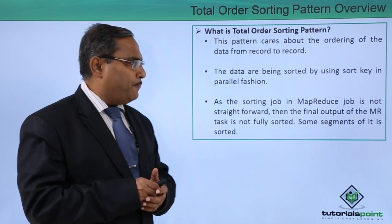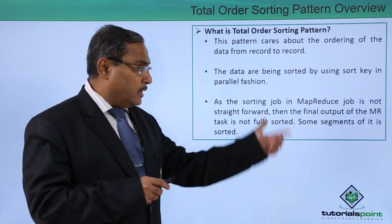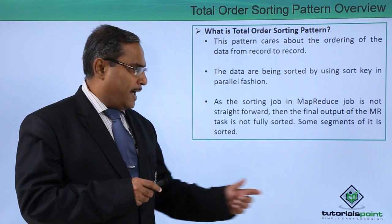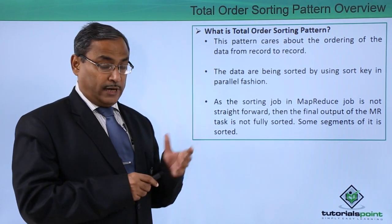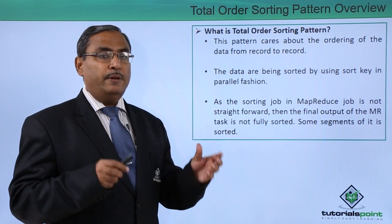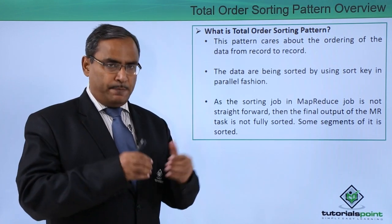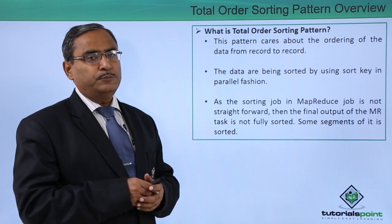As the sorting job in MapReduce job is not straightforward, then the final output of the MR task is not fully sorted and some segments of it will get sorted accordingly. We are having multiple input splits to multiple mappers and mappers will be doing the sorting on them in parallel, and ultimately some segments of it will become sorted.